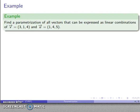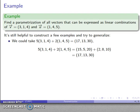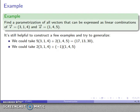Now let's take a look at another one, find a parameterization of all vectors that can be expressed as linear combinations of my two basic vectors. So it's still helpful to construct a few examples and try to generalize them. So let's take a look at the linear combination, 5 of these and 2 of those. And that's scalar multiple 15, 5, 20, scalar multiple 2, 8, 10, and a linear combination. I'm going to add those two together. So there's my vector.